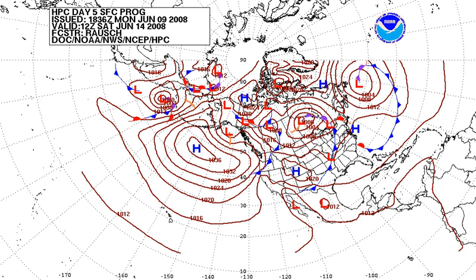Weather forecasting is the application of science and technology to predict the conditions of the atmosphere for a given location and time. People have attempted to predict the weather informally for millennia and formally since the 19th century. Weather forecasts are made by collecting quantitative data about the current state of the atmosphere at a given place and using meteorology to project how the atmosphere will change.